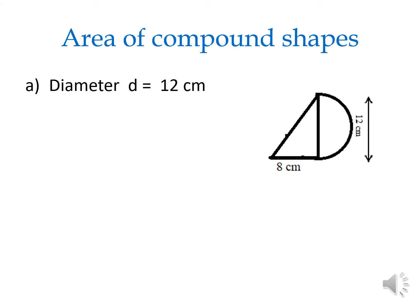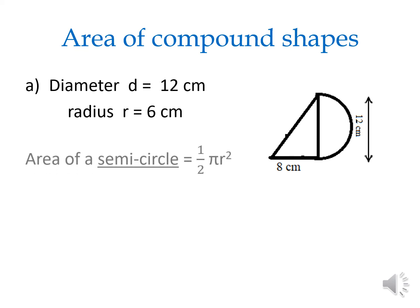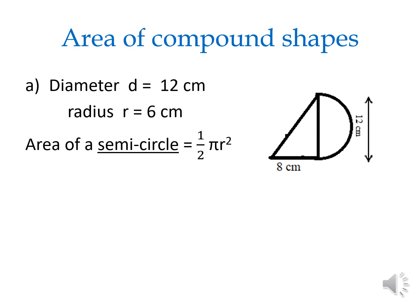Now we have to find the area. The area of compound shapes means first find the area of the semicircle and then find the area of the triangle — or you can do it in either order, it doesn't matter. Then add the areas together. The area of a semicircle: the area of a full circle is pi r square, so a semicircle is half of that — 1 over 2 times pi r square. This is your formula.